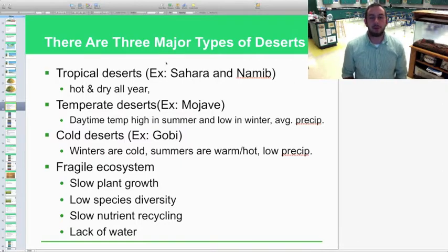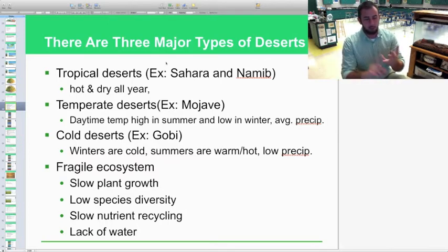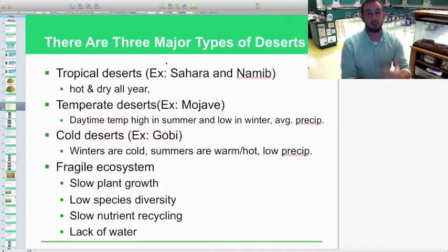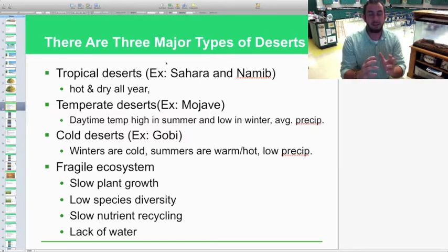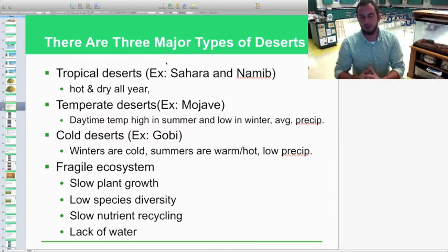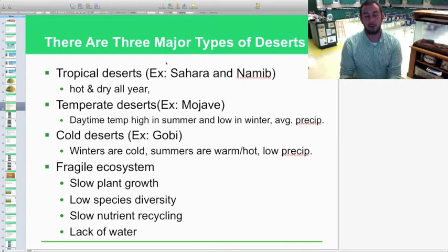There are three major types of deserts. The first one is the tropical desert. It's really hot and dry all year. You will need to know this not only for the quiz, but for your first six-week exam as well as your AP exam. You need to know the characteristics, not only of precipitation and temperature of every single type of biome. Our first one is tropical deserts. A great example, the Sahara and the Namib desert. Very hot and dry all year long.